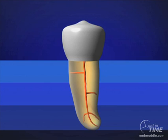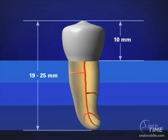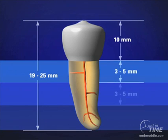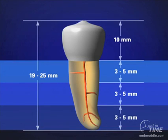Let's talk about a different approach. Most teeth are 19 to 25 millimeters in overall length, with about 10 millimeters of clinical crown — leaving 9 to 15 millimeters of root. Divided into thirds, each third is roughly 3, 4, or 5 millimeters. If we complete coronal and radicular access, removing restrictive dentin from the coronal third, we only have a 6 to 10 millimeter job left for the apical region.